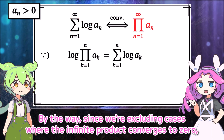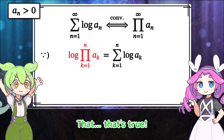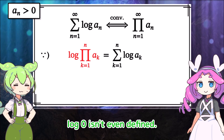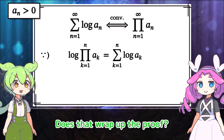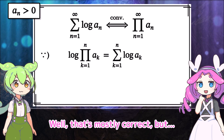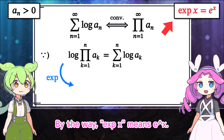By the way, since we're excluding cases where the infinite product converges to 0, we know that even as n approaches infinity, the argument inside the log won't go to 0. That's true — log 0 isn't even defined. Next, similarly, when the infinite sum converges, the infinite product also converges. Does that wrap up the proof? Well, that's mostly correct, but to be thorough, it's better to take the exponential of both sides.